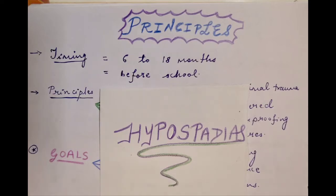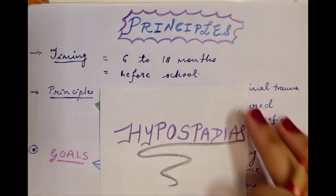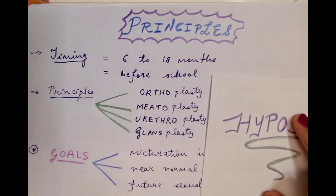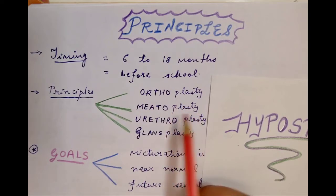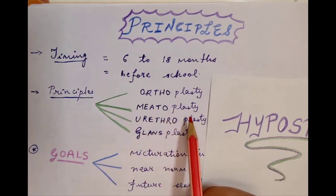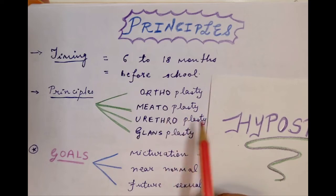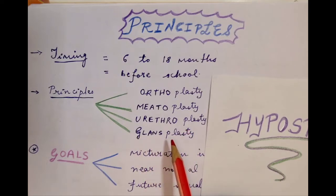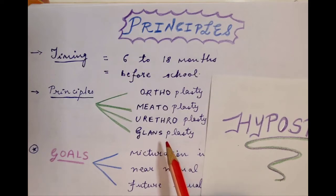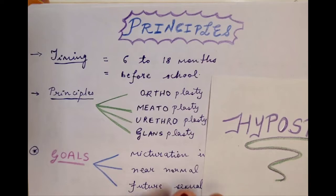The principles — what we aim to achieve with the surgical procedures — involve remembering four plasties. First, orthoplasty, which means straightening of the phallus. Second, meatoplasty, which is the repositioning of the opening of the urethra. Third, urethroplasty — reconstructing a urethra of adequate length and caliber. Fourth, glandsplasty, so that you have a proper shape of the glans as well. Some also include scrotoplasty, which involves proper skin cover and reconstruction of the scrotal area.